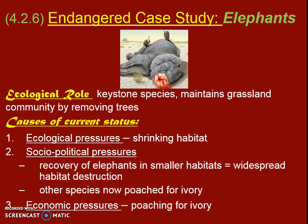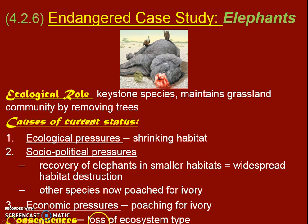There's still a market for ivory, so poachers will continue to sell it as long as it makes money. What we're really worried about — especially since elephants are an ecosystem keystone species that maintains the grassland — is that the ecosystem overall will change without elephants present, and their numbers are decreasing very quickly.